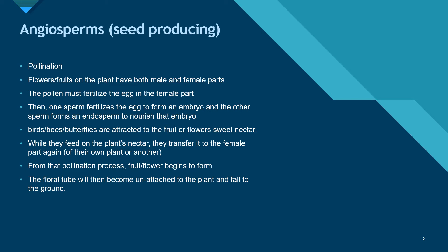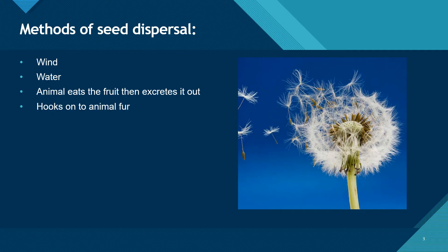After a while, once it grows, we call it the floral tube — it will become unattached from the actual plant and fall to the ground. As we talked about in our first unit, once that floral tube falls — like these dandelions in the picture — those pieces blow away, following wind seed dispersal. There's also water dispersal. If it's a fruit, an animal could eat it and then pass it out, and it will start to grow once buried in the soil. Another common method: if it's a burr, it could hook onto an animal's fur, eventually fall off, and grow as a new plant.